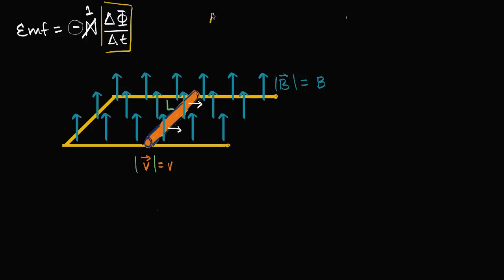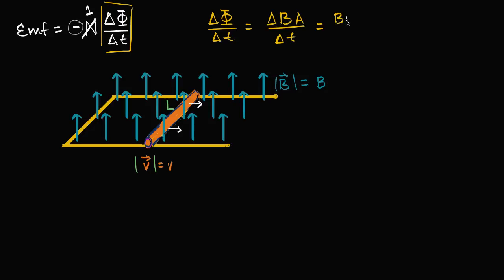So what is that going to be? Our change in flux over change in time — well, our change in flux in this case is going to be the magnitude of our magnetic field that is going perpendicular to the surface, times the area of our surface, over our change in time. B is constant, so the change in B times A is really just going to be B times our change in area over how much time goes by. So what is our change in area going to be?